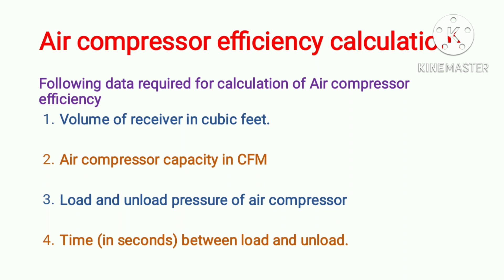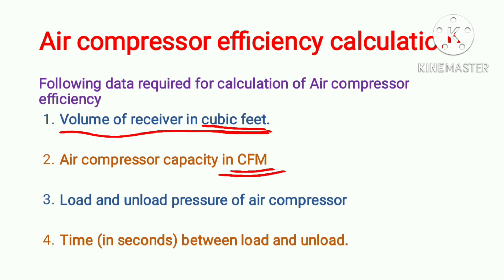The first parameters required for volumetric efficiency calculation of an air compressor are: volume of the air receiver in cubic feet — the receiver in which we store compressed air after compression. Then, air compressor capacity in CFM, which you will find on the nameplate of the air compressor — that is, the design capacity. Then, load and unload pressure of the air compressor.